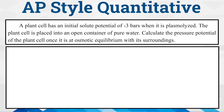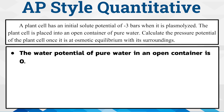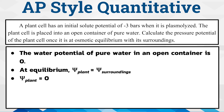In this practice problem, a plant cell has an initial solute potential of negative 3 bars when it is plasmolyzed. The plant cell is placed into an open container of pure water. Calculate the pressure potential of the plant cell once it is at equilibrium with its surroundings. We know that the water potential of pure water in an open container is 0. At equilibrium, the water potential of the plant equals the water potential of its surroundings, so the water potential of the plant cell would be equal to 0. Since the solute potential of the plant is negative 3 bars, we can solve to get positive 3 bars for the pressure potential, as these two add up to a water potential of 0.